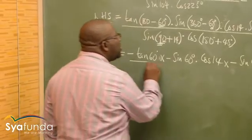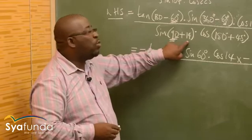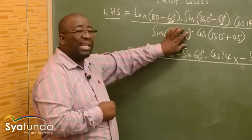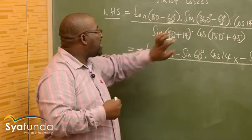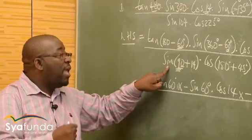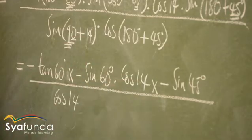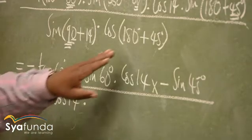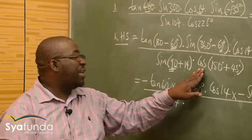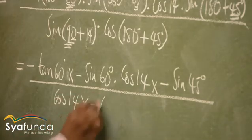That is how we reduce the numerator. Let's go to the denominator. Start where there are brackets: 90 plus. That is the second quadrant. What ratio am I dealing with? Sine. Sine in the second quadrant is positive, but because this is 90, sine will change into cosine. Into cos 14 — that's what I wanted! Then times cos of 180 plus. Which quadrant is 180 plus? The third quadrant. How is cosine in the third quadrant? It is also negative — so we multiply by negative cos 45.